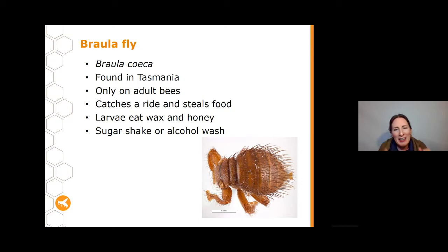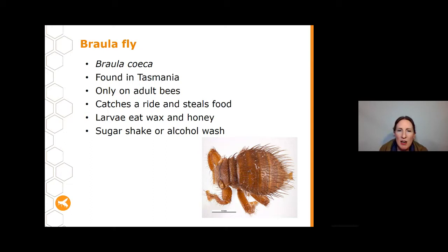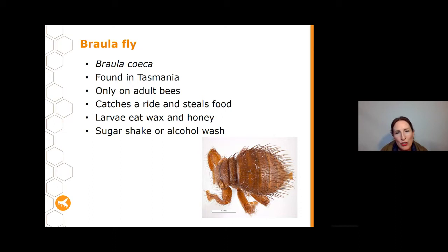Braula fly are only found on adult bees — they don't feed on larvae. While Tropilaelaps and Varroa feed on the hemolymph of adult bees, Braula fly are basically freeloaders: they grab onto the bees for a ride and steal food as the bees are collecting it. When eggs are laid in the cells, they'll hatch and eat the wax and larvae throughout the brood frames. The best way to find Braula fly is a sugar shake or alcohol wash, since they're on adult bees and not in the larvae. This is why it's really important to use a combination of all three methods — sugar shake, alcohol wash, and drone uncapping — to check for all these different pests.